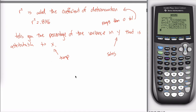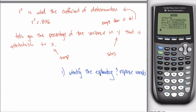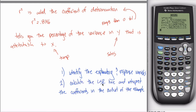A typical problem will follow all of these steps. First: identify the explanatory and response variables. In every single problem you'll have two variables — in this case temperature and sales. One is the explanatory variable, the other is the response variable. Think cause and effect. Second: calculate the LSR line — that's Y equals ax plus b, where a and b are values that come straight out of your calculator from LinReg ax plus b.